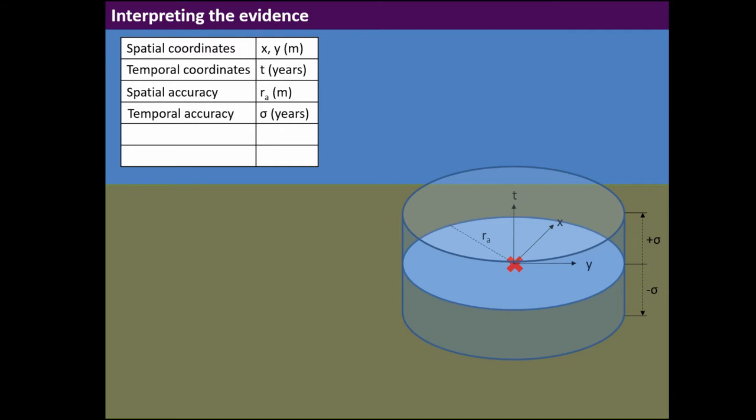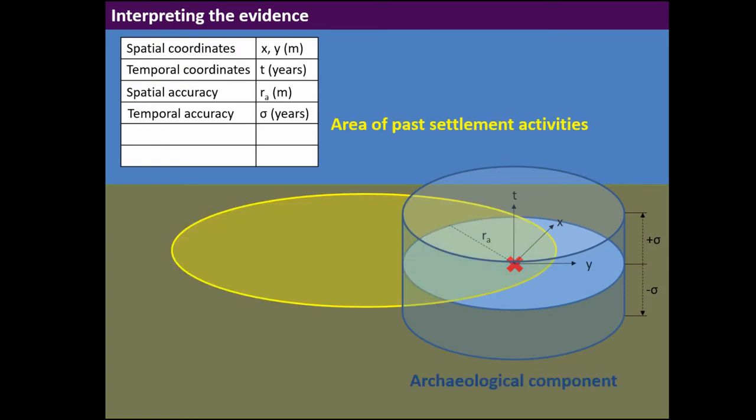There's temporal accuracy. If it's archaeological dating, you have uncertainty stemming from the length of the interval, or if it's C14 dating, you have the standard deviation given by the laboratory. This is the archaeological evidence, but what's important to keep in mind is this find actually represents evidence of a settlement or area of settlement activity that existed.